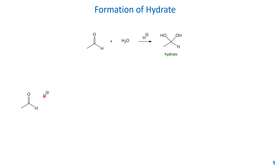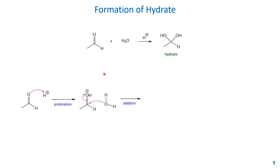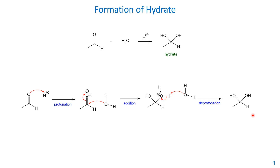Let's look at the arrow-pushing mechanism. The first step is protonation: the oxygen of the aldehyde attacks the proton from the acid to form a protonated intermediate. This activates the carbonyl group — the carbon becomes more electrophilic. Then water acts as the nucleophile, attacking that carbon and pushing the pi electrons to the oxygen. Next, water acts as a base to deprotonate, pushing the sigma electrons to the oxygen to neutralize the positive charge, giving the hydrate product. It's a three-step mechanism.